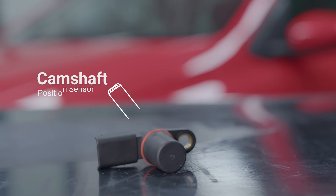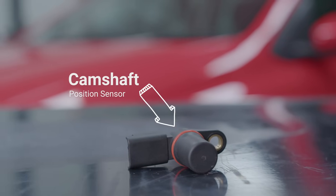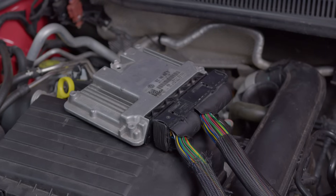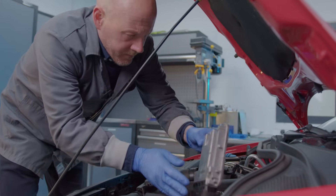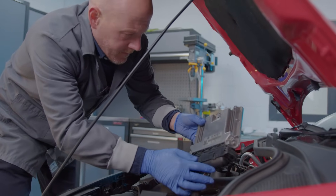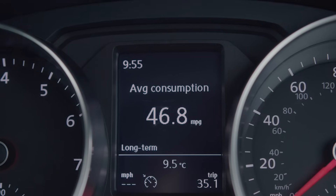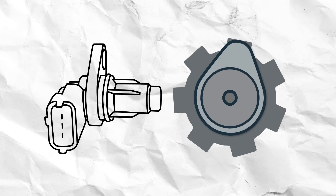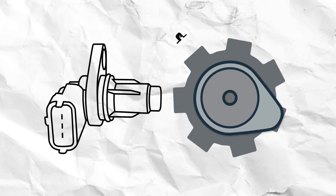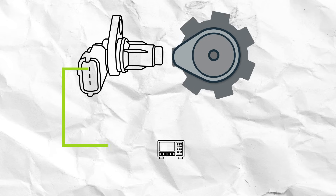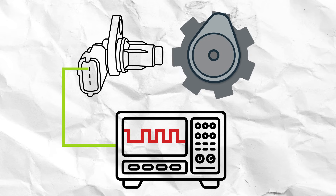The camshaft sensor is a critical component in modern vehicle technology, providing essential information to the ECU regarding cylinder event timing. This data enables vehicles to maximise engine performance and efficiency. Modern camshaft sensors utilise hall effect technology, where a reluctor ring with teeth located close to the sensor produces an on-off digital waveform, which the ECU can then read.